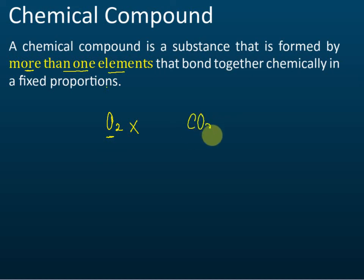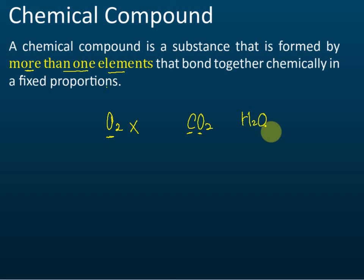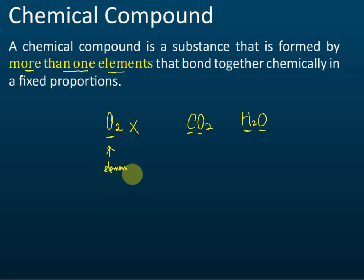How about carbon dioxide? Is this a chemical compound? Yes, because there are two types of elements. Water is also a chemical compound, because there are two types of elements. That's the difference between a compound and an element.